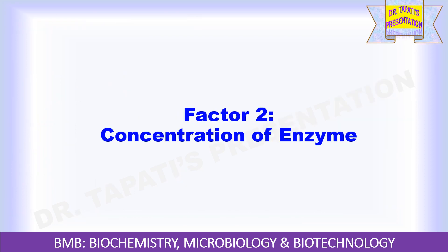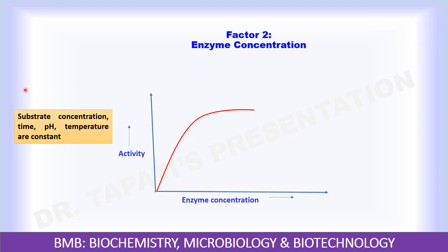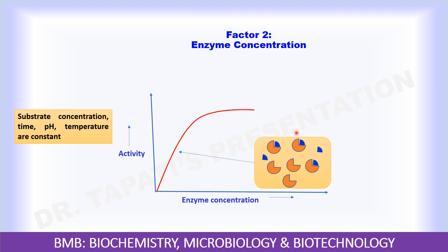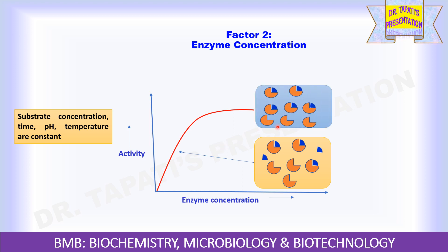Let's see the effect of enzyme concentration on enzyme activity. When substrate concentration, time, pH, temperature, and all other factors remain constant, an increase in enzyme concentration will increase the reaction rate until it reaches a certain point, after which it will remain constant. The number of active sites available increases as enzyme concentration rises, whereas the reaction will no longer increase once all the substrates have been bound to the active site of the enzyme, as there will be no substrate left for the new enzyme to bind.